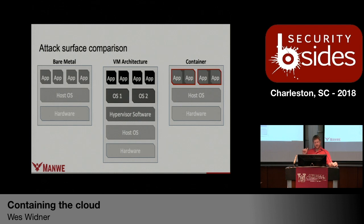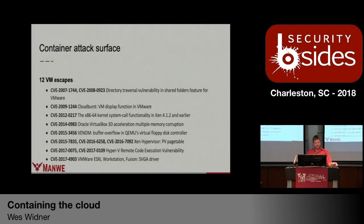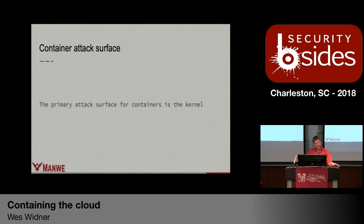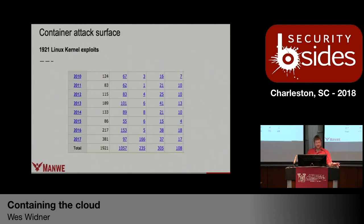One of the interesting things is the attack surface. If you're deploying on bare metal, it's the most secure because it has its own dedicated hardware. VM architecture is more secure than container architecture because there's no hypervisor between the container and the host OS. There have been only 12 VM escapes up to 2017, many for silly things like floppy disk controllers or VGA drivers. By comparison, the attack surface for the container is the kernel, which has almost 2,000 vulnerabilities up to 2017.